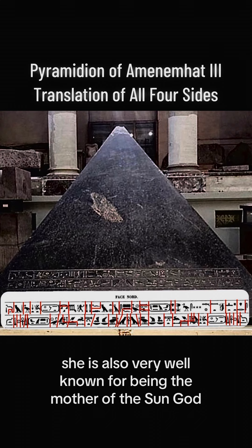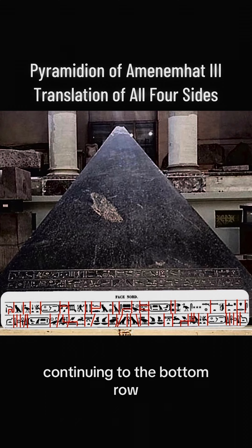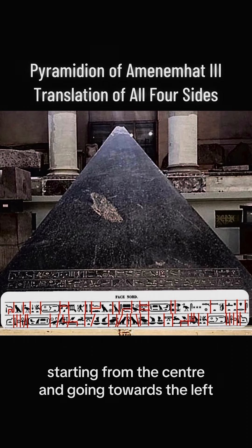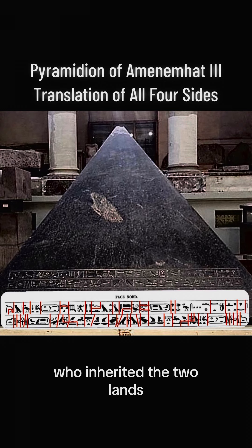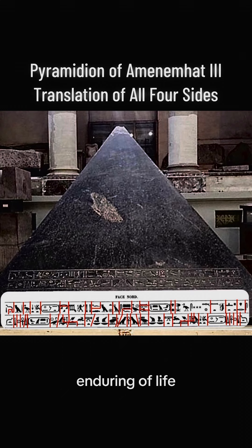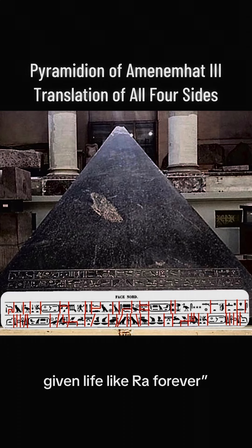She is also very well known for being the mother of the sun god. Continuing to the bottom row, starting from the center and going towards the left: The living Horus, the great of might. The two ladies who inherited the two lands. The golden Horus, enduring of life. The son of Ra, Amenemhat. Given life like Ra forever.